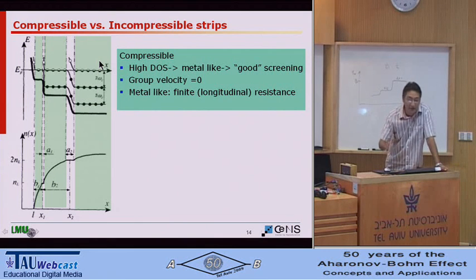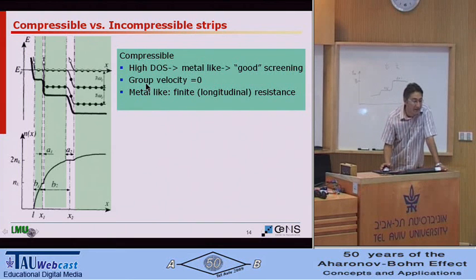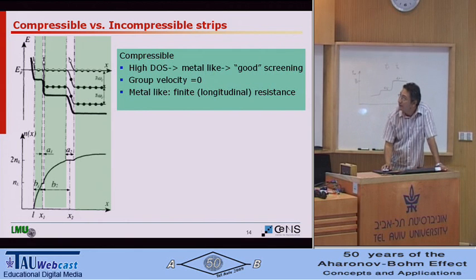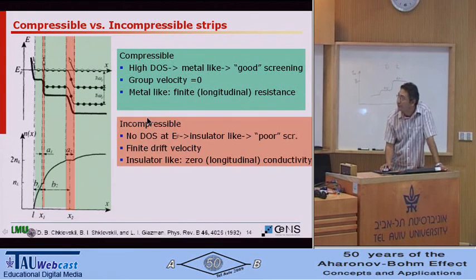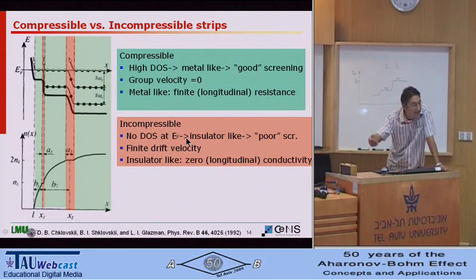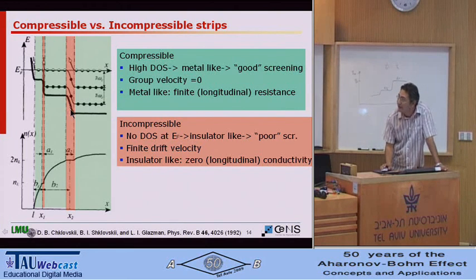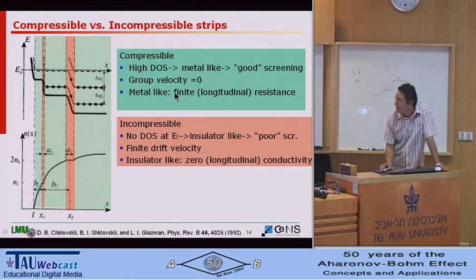Let's look at these two because this will be important later. The compressible state is where your Fermi energy is equal to the Landau level: you have high density of states, metal-like, good screening. Group velocity is zero, however, because it's a metal — there is no potential variation. There is a finite longitudinal resistance for normal electrons. In the incompressible strip, however, you have no density of states at the Fermi level, so it's an insulator-like state with poor screening. Fortunately there will be a finite drift velocity so you can carry equilibrium current there, and the longitudinal conductivity vanishes.